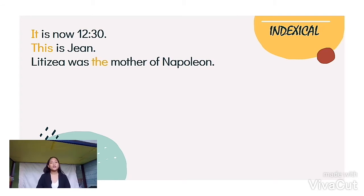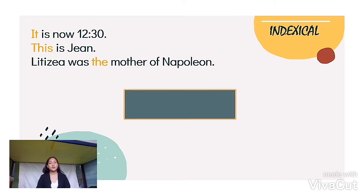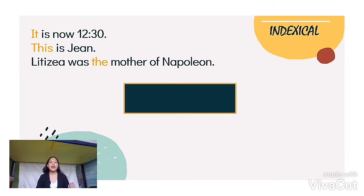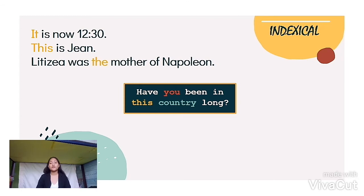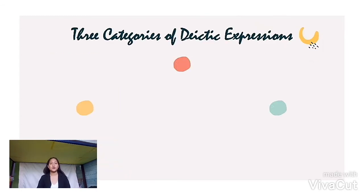So let me give you another example. If you would ask a visiting exchange student and ask him this question — Have you been in this country long? — the words this country and you are the diactic expressions, as they refer to the country where the conversation happens and the person being addressed in the conversation, respectively.